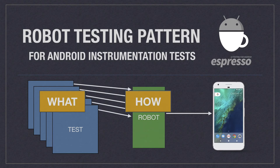While the robot pattern is a newly coined term for Android, the concept has been around a long time and is similar to page objects, which was used originally for testing web applications. The goal of both is to create a logical abstraction on top of the implementation for interacting with your user interface.